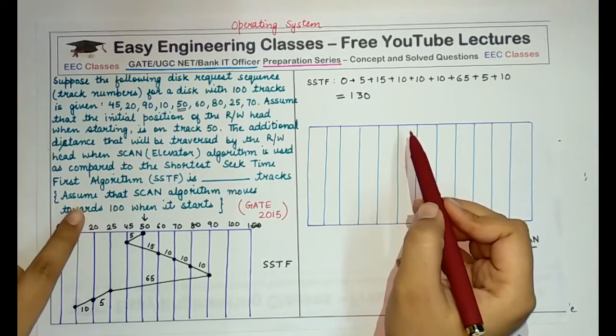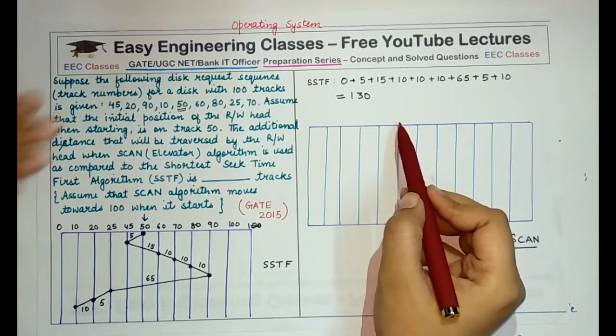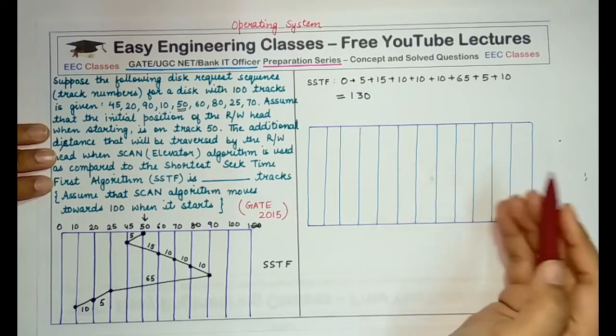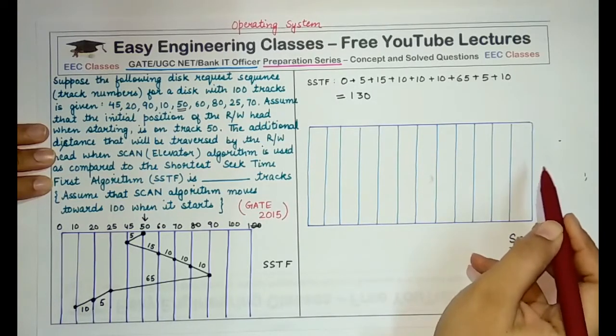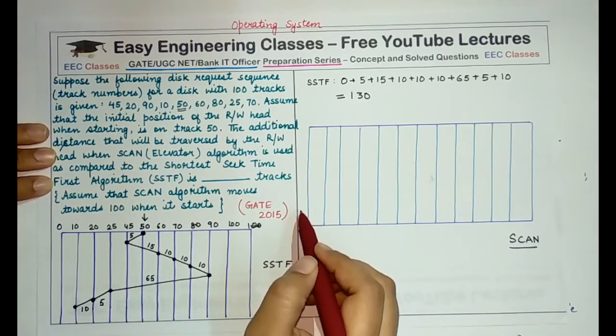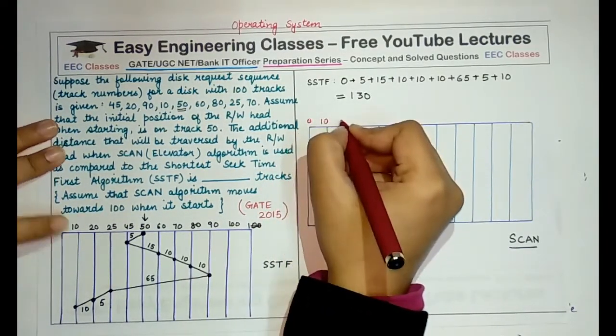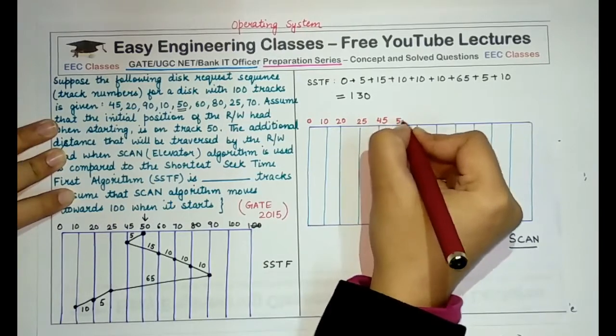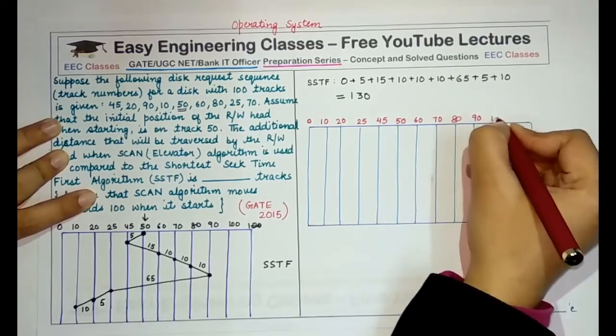So if it starts somewhere at 50, since we are told that in the scan algorithm, we have to move towards 100, it will start from 50 because the current head is at 50. And it will service all the requests while going to one end of the disk, which is 100. And it will go to 100 also, to the extreme end of the disk. And then it will reverse its direction and come back till the first request. So now let's number the requests just like we did in the previous traversal. So 10, 20, 25, this is 45, then 50, that is the location of the current head, 70, 80, 90, and 100. This is the end.